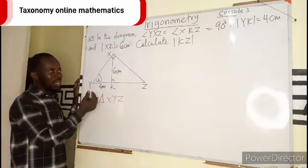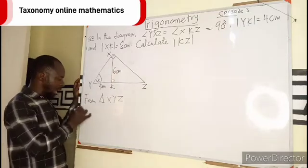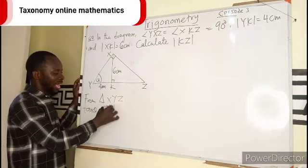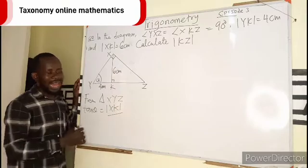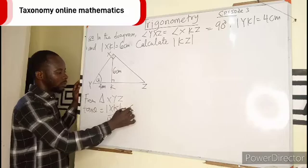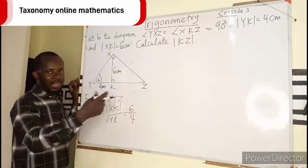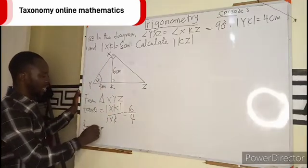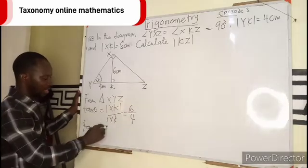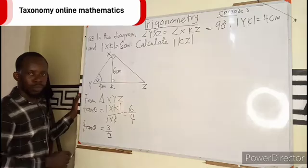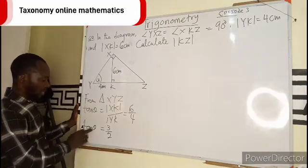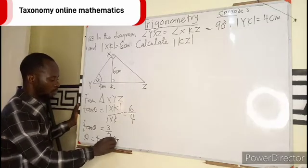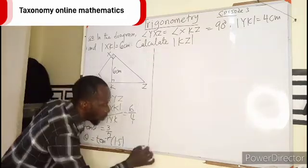So if I take my SOHCAHTOA, it is going to be TOA, opposite adjacent. So I have tan theta equals to opposite, which is going to be the length of XK over adjacent, the length of YK. So 6 over 4. As in 6 cm over 4 cm, the cm will cancel. We will be having tan theta equals to 2 as a factor, give us 3 over 2. We are looking for theta. Theta equals to tan inverse of 1.5.